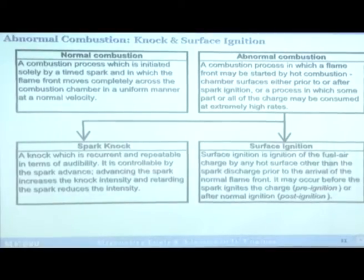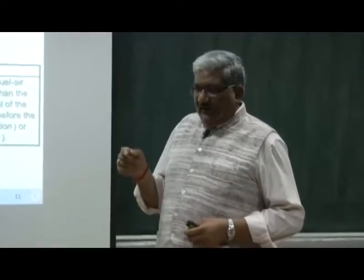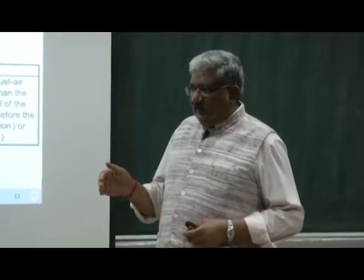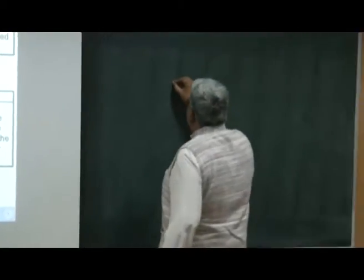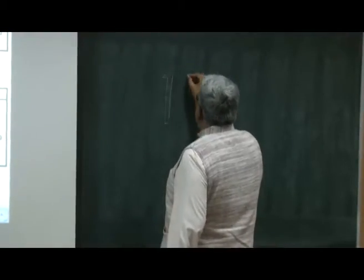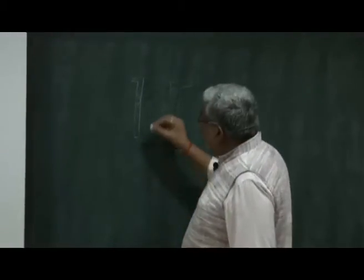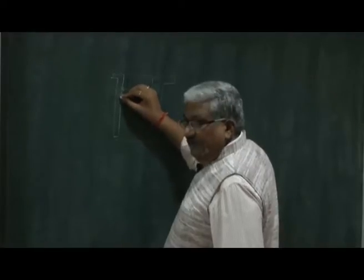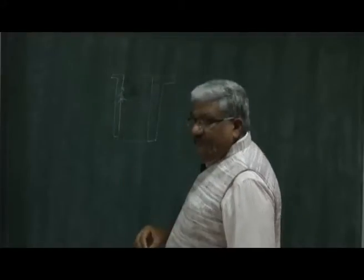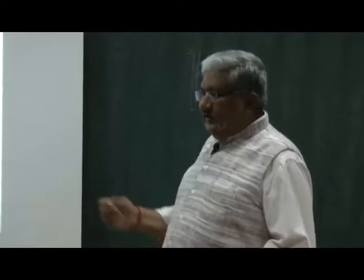In the combustion chamber, if there is a carbon deposit or a casting defect — say a bubble inside the cylinder liner casting — that area will not be able to transfer heat because the bubble acts as an insulator. So that area of the liner will become hotter and may start igniting the fuel-air mixture. This is called surface ignition. If this ignition happens before the normal spark ignition it is pre-ignition; if it happens afterwards it is post-ignition.